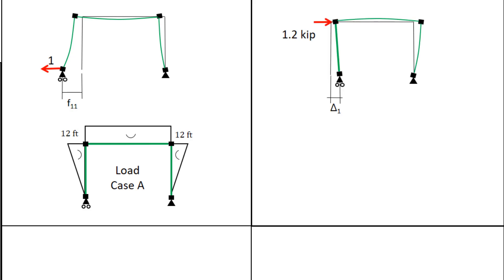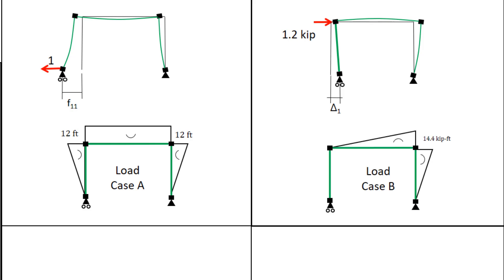Next, we'll look at the lateral load — the applied load of 1.2 kips applied to the primary structure. The deformed shape of the structure is shown here, and the deflection delta 1 is the deflection at R1 due to the applied load of 1.2 kips. The moment diagram is shown here. If you're not convinced about this, pause the video, do the calculations, and convince yourself that this is the right moment diagram.